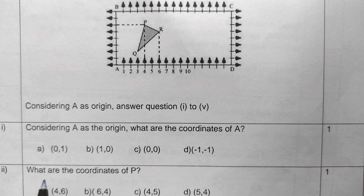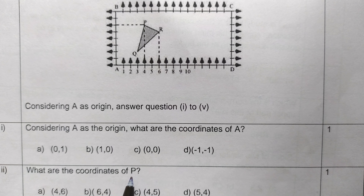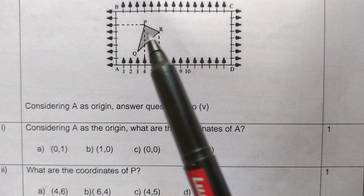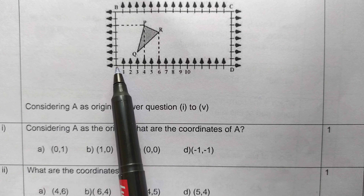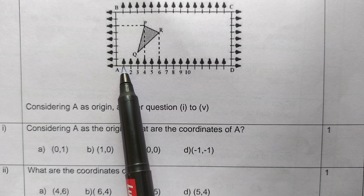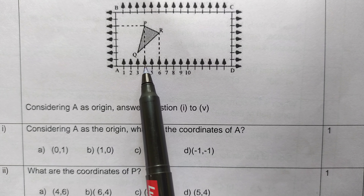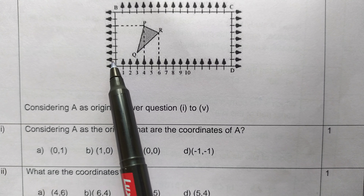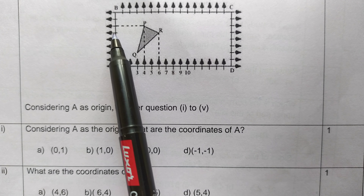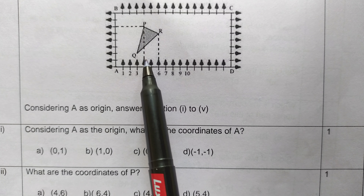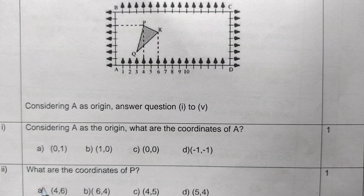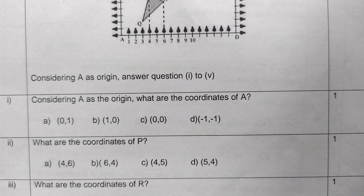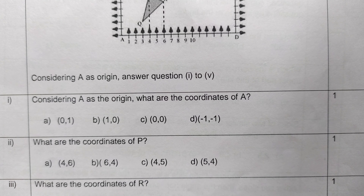The second question is: what are the coordinates of point P? Looking at point P on the figure, the x-coordinate is one, two, three, four — so x is 4. The y-coordinate is one, two, three, four, five, six — so y is 6. Therefore the coordinates of point P are (4, 6), and option A is the correct answer.